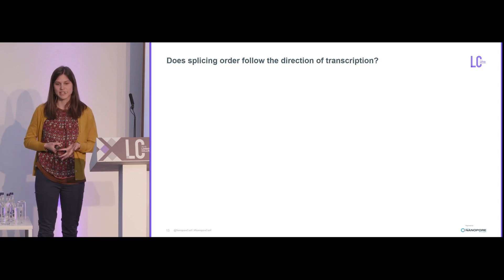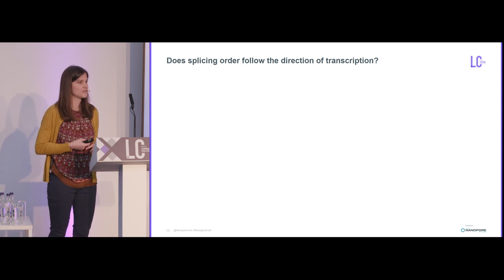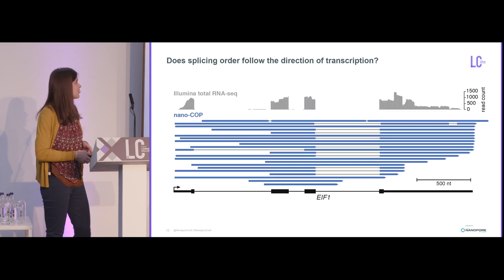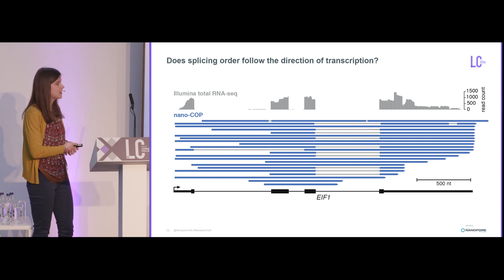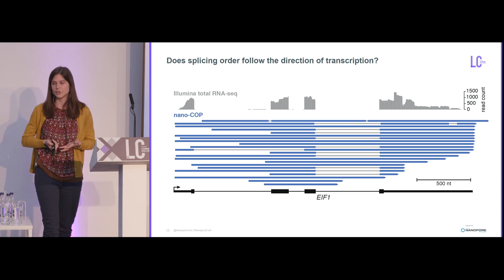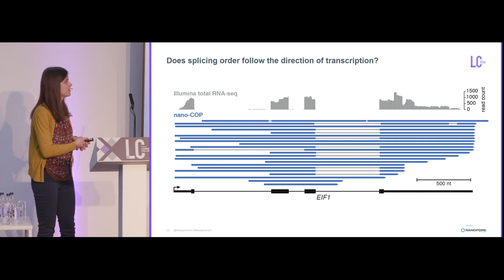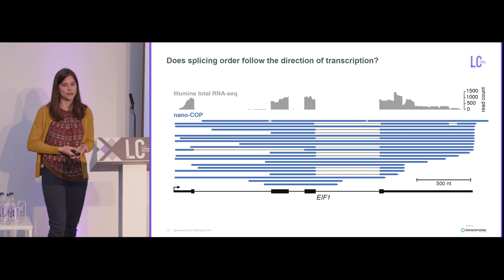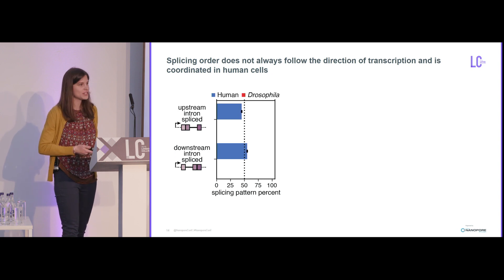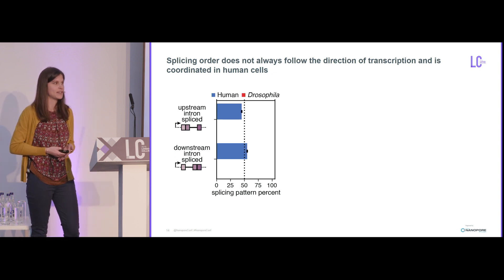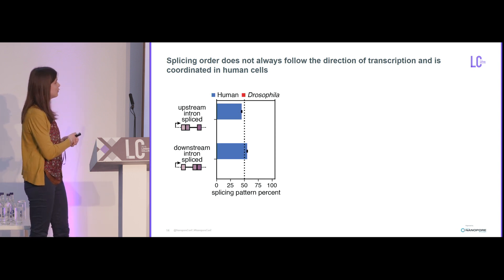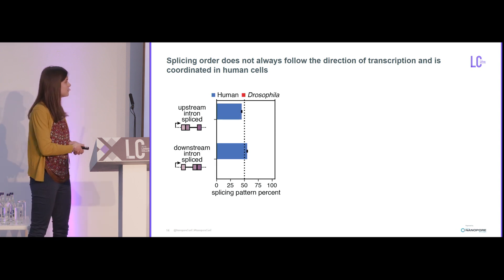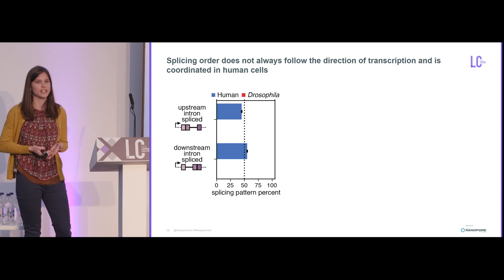Another question I wanted to ask is whether or not splicing follows the order of transcription. If transcription and splicing are coupled, you would assume that splicing might just follow the order of transcription as the RNA is being transcribed. Looking at the EIF1 gene in human K562 cells: with Illumina short-read data, all three introns appear constitutively spliced. But in the long-read nascent RNA data, we can see that the third intron tends to be spliced before the upstream two, suggesting that at least in this gene, splicing is not following the order of transcription. Globally, plotting all reads spanning pairs of introns, in human cells it's really 50% for each direction, suggesting transcription direction isn't dictating the order of splicing.